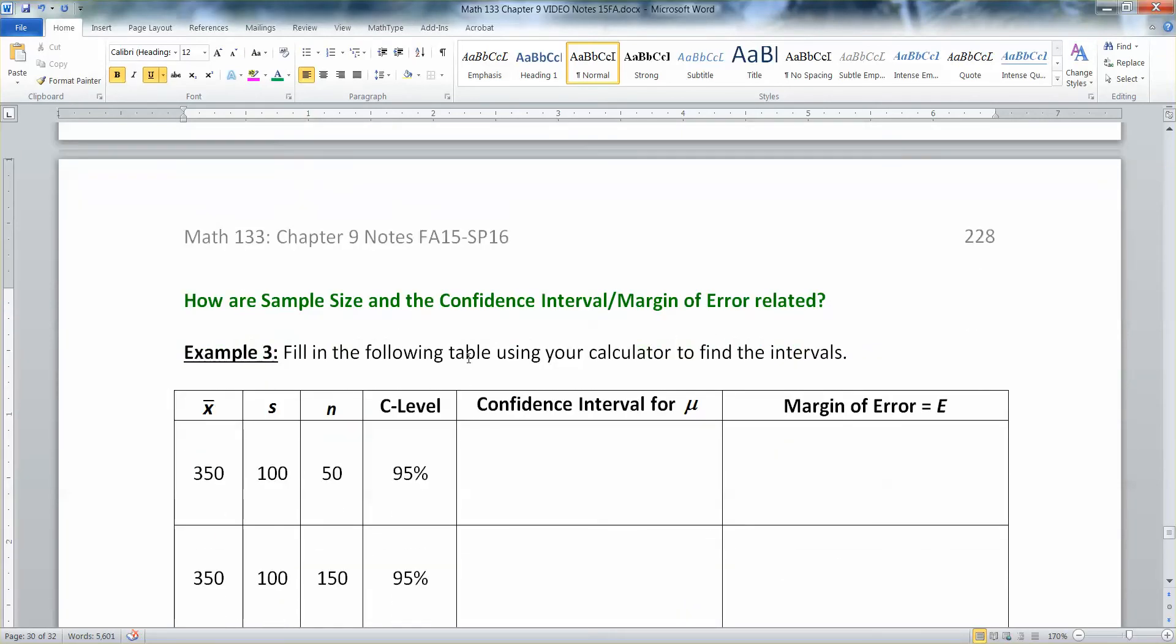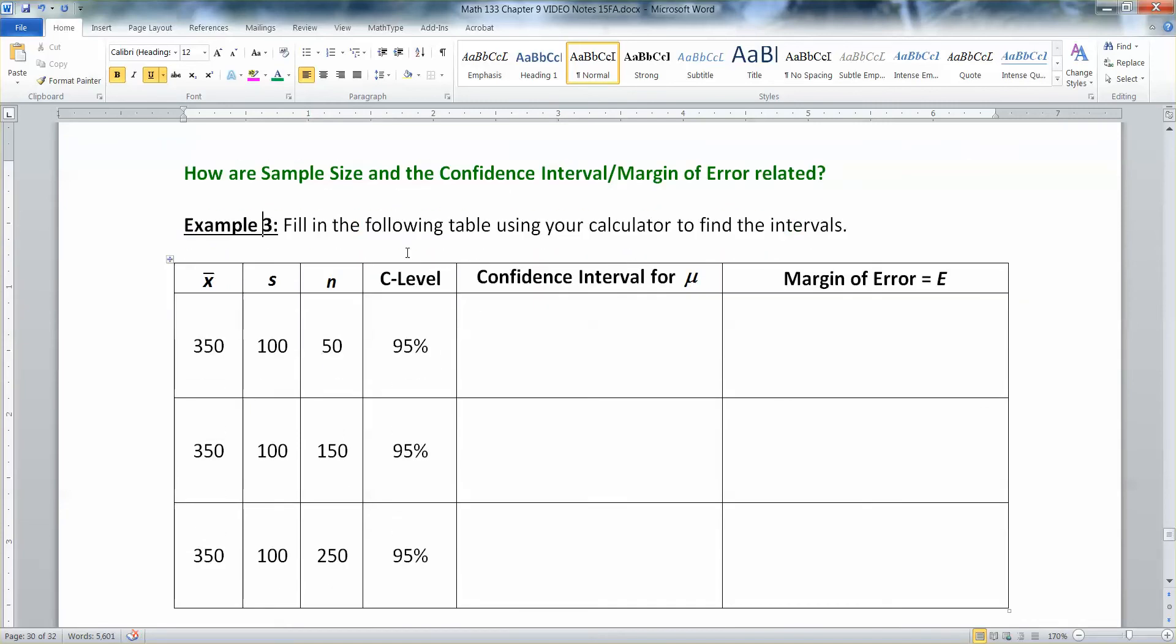Now what about sample size and error in the interval? How does sample size relate to all of that? So what we're going to do is we're going to look at confidence intervals and how the confidence interval for mu changes with these provisions.